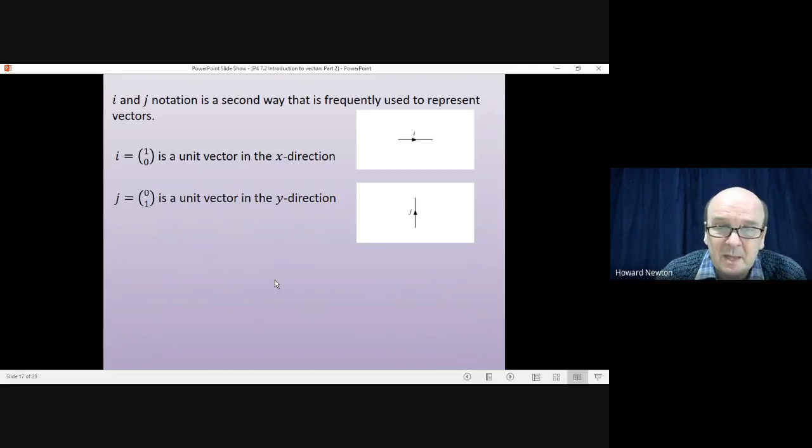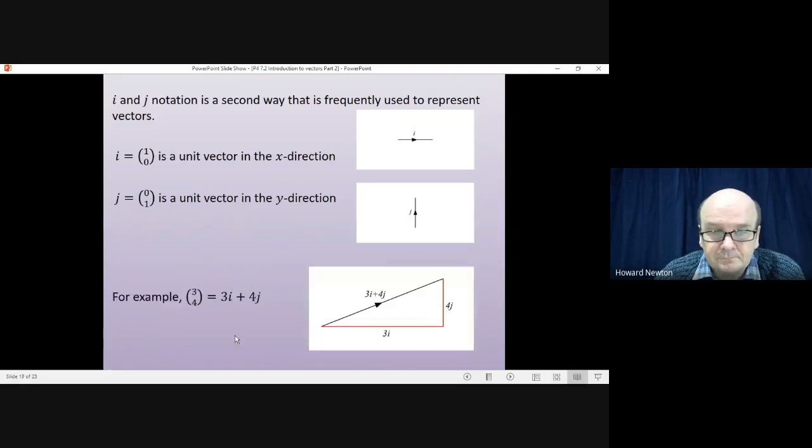And j is the same thing, but in the y direction. So j is the vector 0, 1. It doesn't go anywhere in the x direction, but it goes vertically upwards by 1. It's the unit vector in the y direction. So for example, if we had the column vector 3, 4, that means we've gone 3 in the x direction. That's 3i plus 4 in the y direction. That's 4j. So you can write it as a column vector 3, 4. You can write it in i, j notation as 3i plus 4j. And don't think that there's a difference between these two things. They mean exactly the same thing. It's just two different ways of writing down the vector.